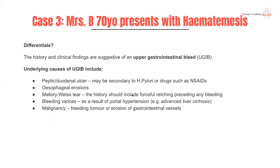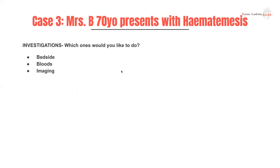What are your differentials? For an upper GI bleed: peptic or duodenal ulcer — which can be secondary to H. pylori or drugs such as NSAIDs — esophageal erosions, Mallory-Weiss tears, bleeding varices, and malignancies of the esophagus and stomach. An important point: gastric ulcers are typically caused by NSAIDs, and duodenal ulcers are mostly caused by H. pylori — covered in the lecture on peptic ulcer disease.